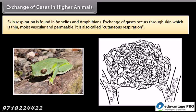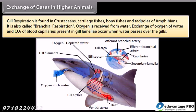Skin respiration is found in annelids and amphibians. Exchange of gases occurs through skin which is thin, moist, vascular, and permeable. It is also called cutaneous respiration. Gill respiration is found in crustaceans, cartilaginous fishes, bony fishes, and tadpoles of amphibians. It is also called branchial respiration. Oxygen is received from water; exchange of oxygen from water and CO2 from blood capillaries present in gill lamellae occurs when water passes through the gills.